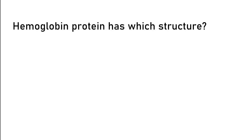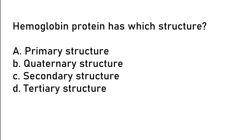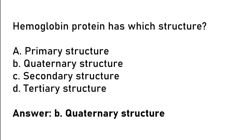Hemoglobin protein has which structure? Primary structure, quaternary structure, secondary structure, tertiary structure. So the correct answer is option B. Quaternary structure.